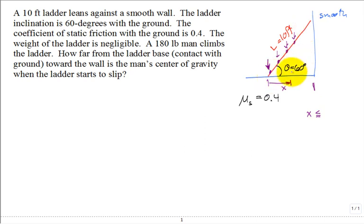That would be 10 feet times cosine of 60 degrees. So we know our answer needs to be between zero and that maximum, or the ladder won't slip even if the man's at the very top.